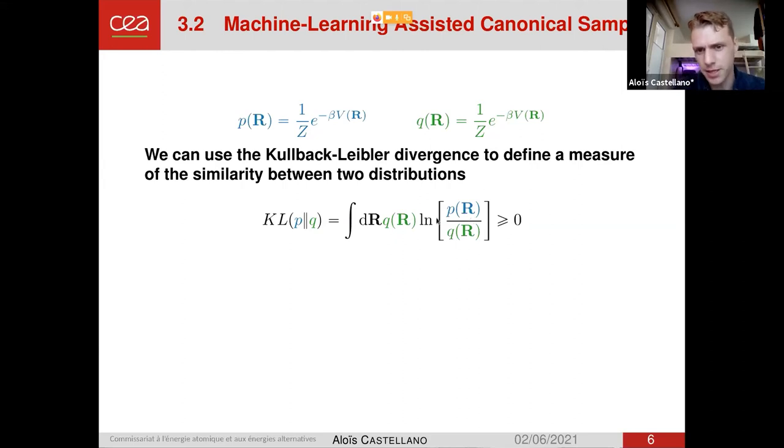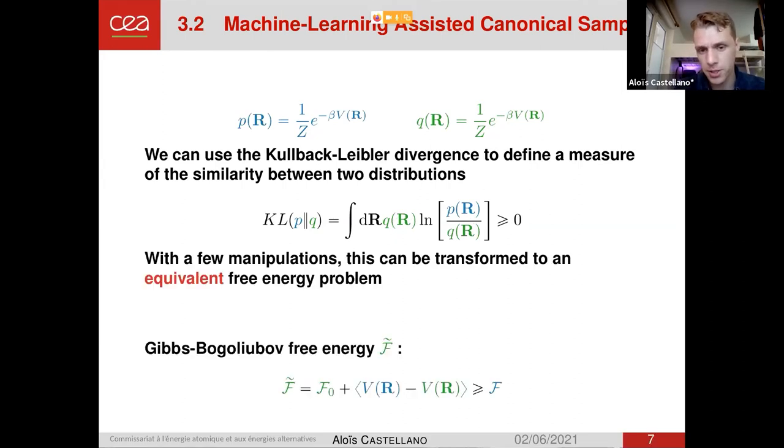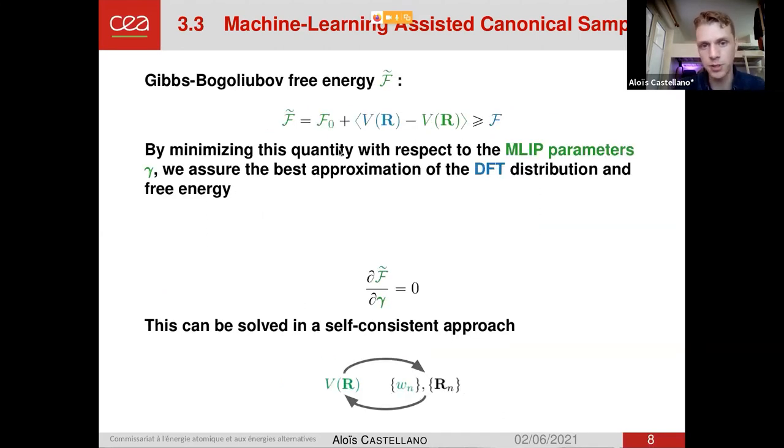But it's not very easy to work with it as it is written here. But with simple manipulations, we can transform it to an equivalent free energy problem, which is called the Gibbs-Bogoliubov free energy, which is defined as the free energy of the machine learning potential, plus the average of the difference between the DFT potential and the machine learning potential, the average being taken for the machine learning distribution. This quantity is always superior to the DFT free energy, and this is an equivalent problem to the Kullback-Leibler divergence, meaning that if we minimize this quantity with respect to the machine learning parameters, which I would call gamma, we assure the best approximation of the DFT distribution and the best approximation of the free energy. So what we will want to do is get the gradient of this Gibbs-Bogoliubov free energy equal to zero.